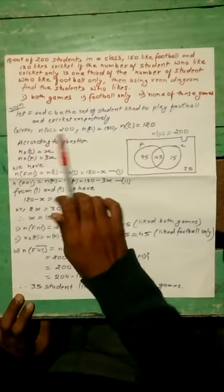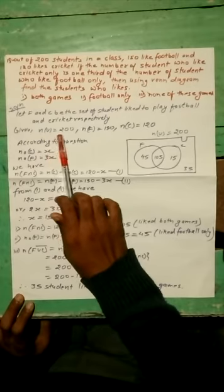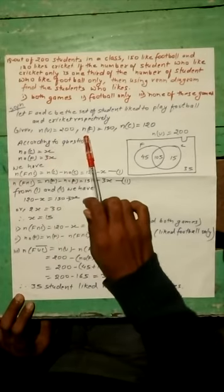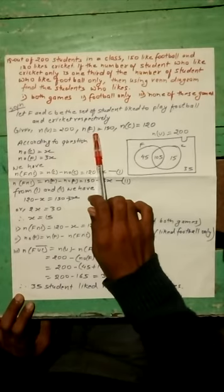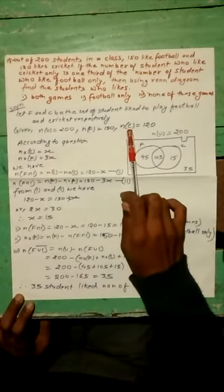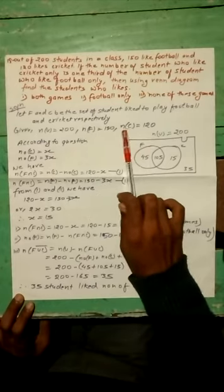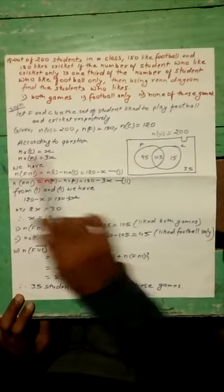Similarly, given the universal set, we have n(U) = 200, n(F) = 150, and n(C) = 120. According to question,